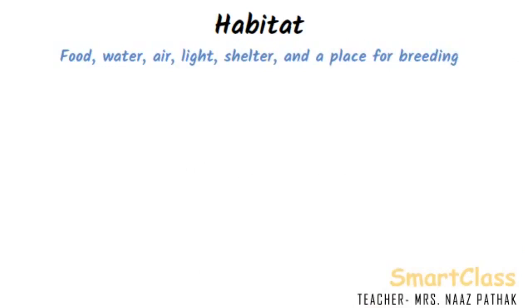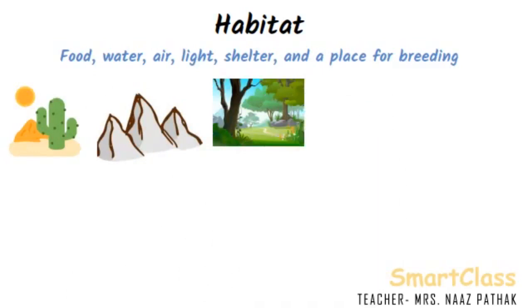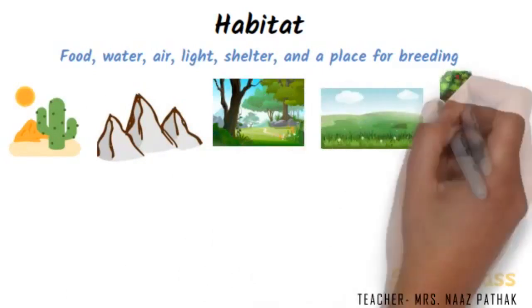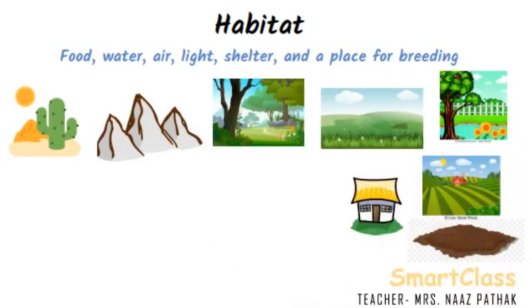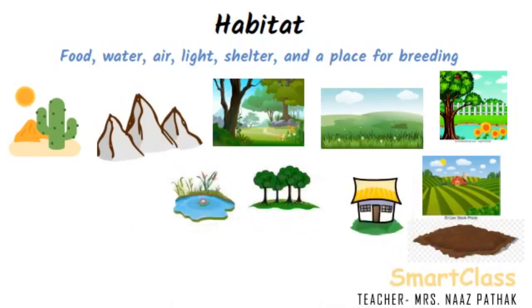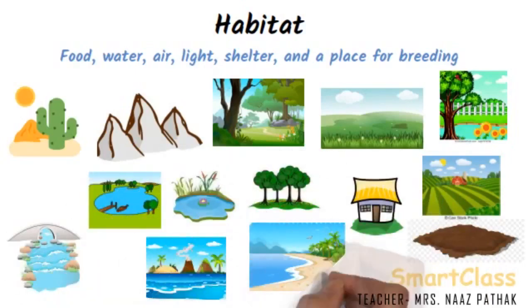Different types of plants and animals live in different habitats. Some of the examples of habitat are deserts, mountain ranges, forests, grasslands, gardens, fields, soil, homes, trees, ponds, lakes, river, ocean and seashore.